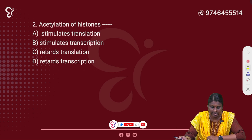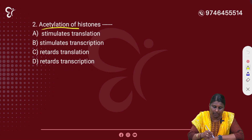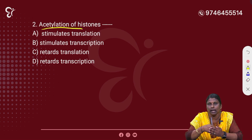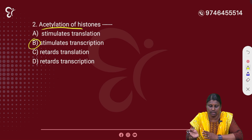Second question: Acetylation of histones — Option A: Stimulate Translation. Option B: Stimulate Transcription. Option C: Retards Translation. Option D: Retards Transcription. Acetylation of histones affects chromatin accessibility, helping DNA-binding proteins access DNA and enabling transcription. The correct answer is Option B: Stimulate Transcription.